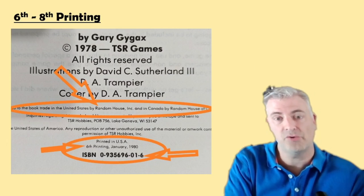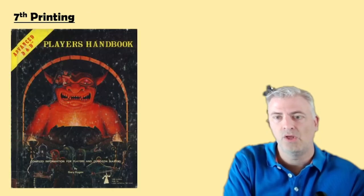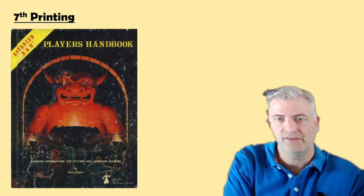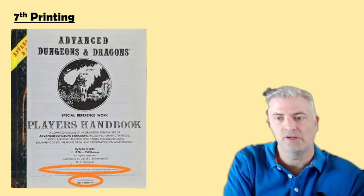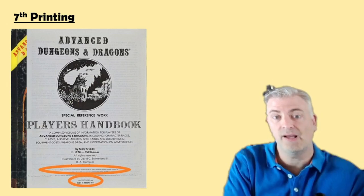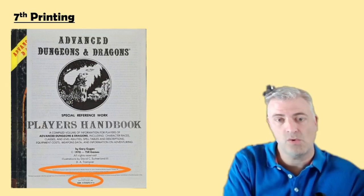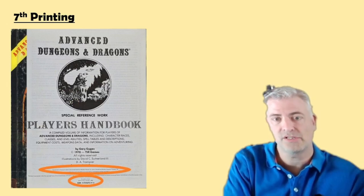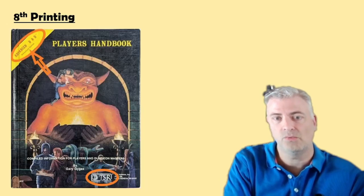So how do we tell the sixth, seventh, and eighth printings apart? In the seventh printing, you see the same cover and the same copyright page. But now the end pages and fly leaves have become white. So: sixth printing — orange end pages; seventh printing — white end pages.